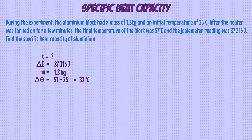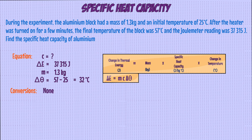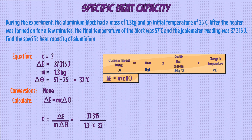We want to find out what specific heat capacity is, so we use the equation that we looked at earlier. If you compare the units in the equation to the question, you can see that there are no conversions that need to be done. So we rearrange the equation and substitute in the values to give us 37,315 divided by 1.3 times 32. This gives a final value of 897 joules per kilogram per degree C.